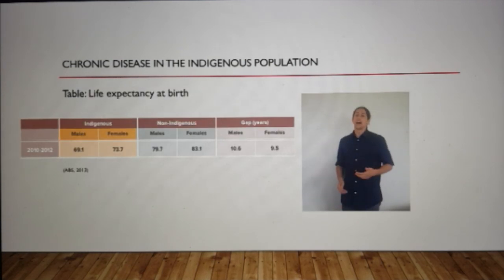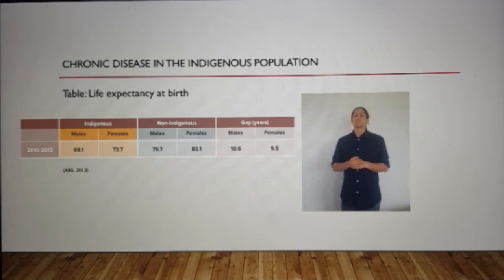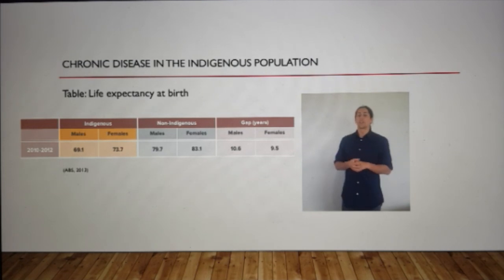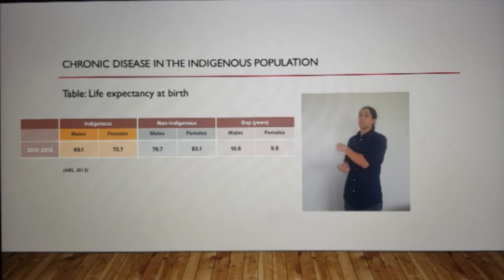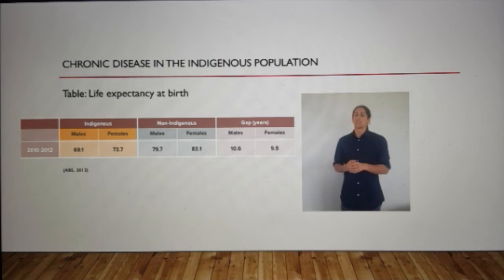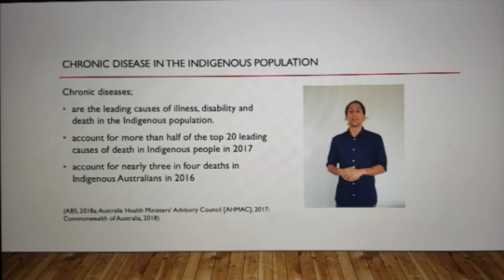Let's have a look at this table showing life expectancy at birth for Indigenous compared to non-Indigenous Australians. Indigenous males have a life expectancy of 69.1 and females 73.7, compared to non-Indigenous males at 79.7 and females at 83.1. The third column shows the gap between those figures. As a group, we can see that Indigenous Australians experience widespread disadvantage and health inequality. Chronic diseases are the leading cause of illness, disability and death in the Indigenous population.